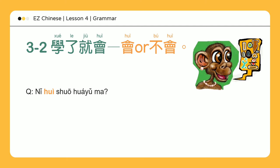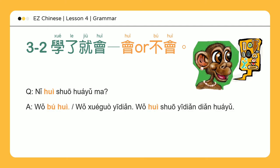我不会 — I don't know how. 我学过一点: 我会说一点点华语 — I have learned a little Chinese, so I can speak some.